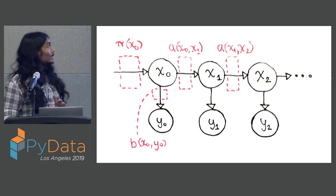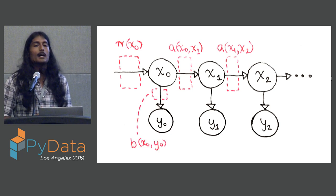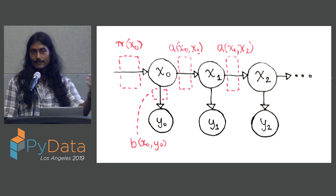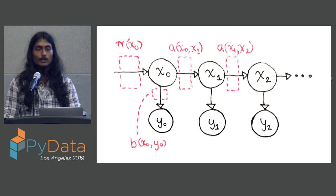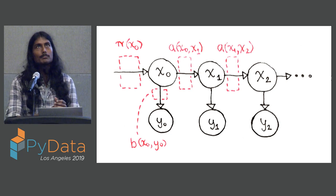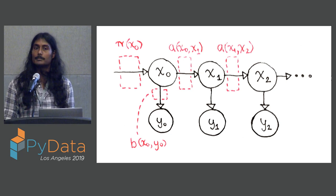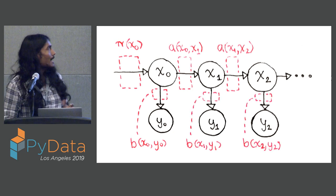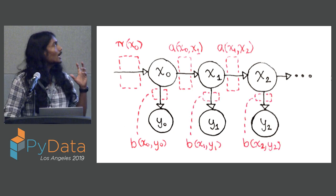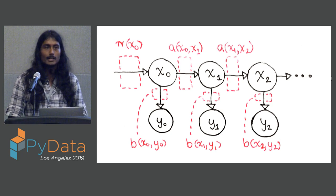Finally, the last parameter of our hidden Markov model is the emission probability. Given a particular syllable, what probability do you have of emitting a particular waveform? And that exists for every pair of state and emission.